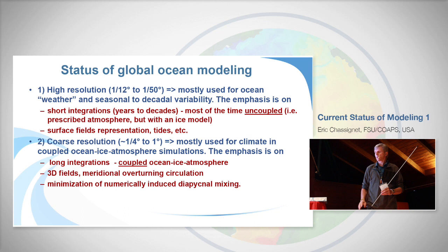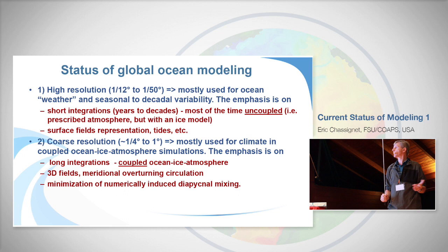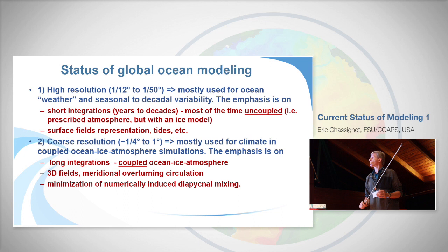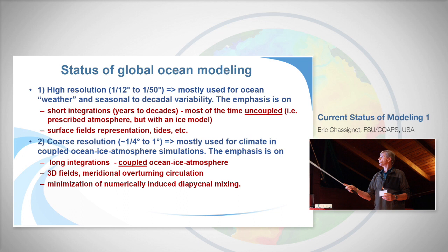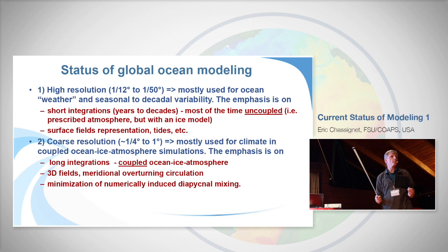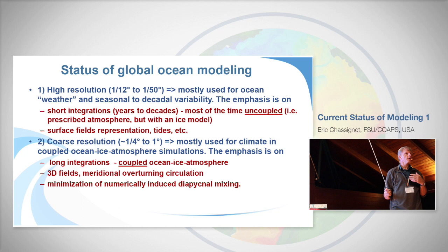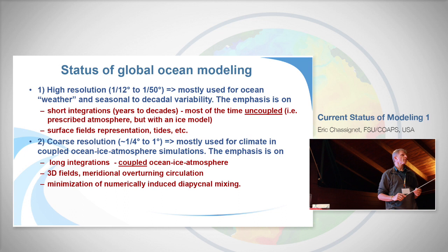Where do we stand right now? High resolution — 1/12th to 1/50th degree — is currently the standard. These are mostly used for ocean weather or seasonal to decadal prediction, with emphasis on short integration spanning years to decades. Most of the time they're uncoupled from the atmosphere: using a prescribed atmosphere coupled to a sea-ice model, with focus on surface field representation and possibly the addition of tides.